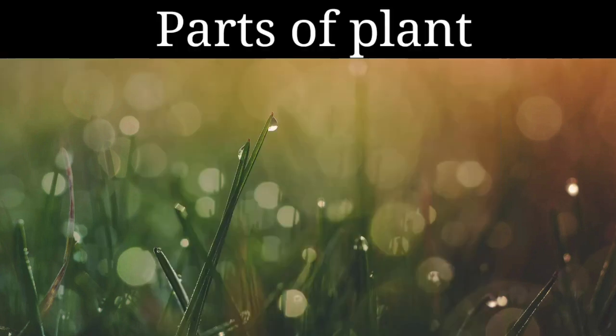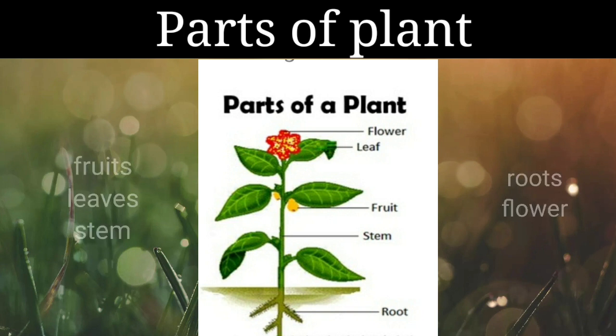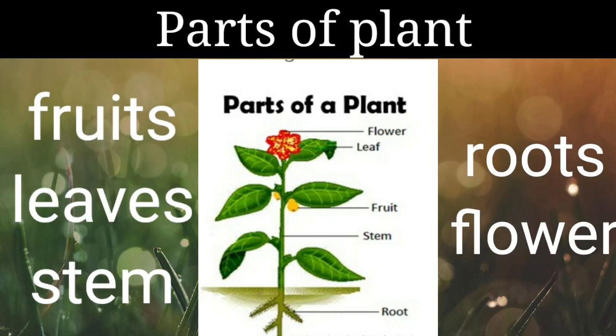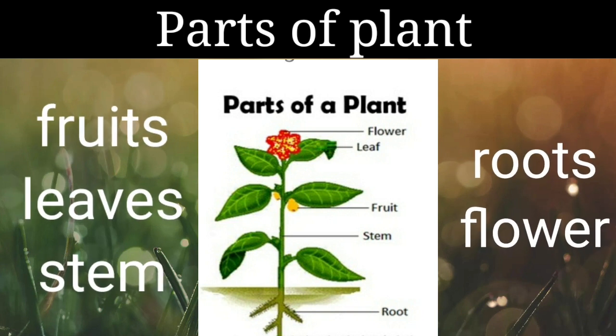Now children, let's see the various parts of plants: fruits, leaves, stem, roots, and flowers. These are the main parts of a plant.